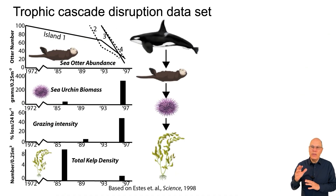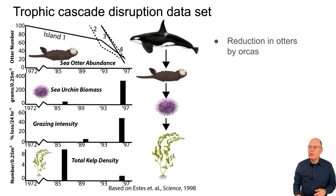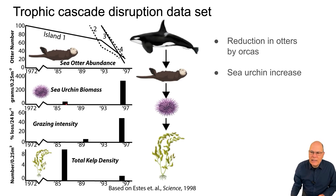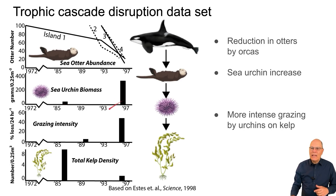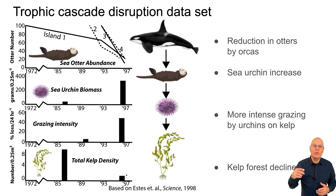You can see this in this data set, and this kind of data set is something that could definitely appear on the AP Bio exam or on your teacher's next test. What this shows is that a reduction in otters by orcas — these numbers show the various islands where Estes studied this decline — led to an increase in the biomass of sea urchins in the late 1980s and just before 1997. That led to more intense grazing by sea urchins upon kelp, and that led to kelp forest decline, which you can see in the overall decrease in kelp forest density. What's important is your ability to interpret these data sets and connect it to the idea of a trophic cascade.